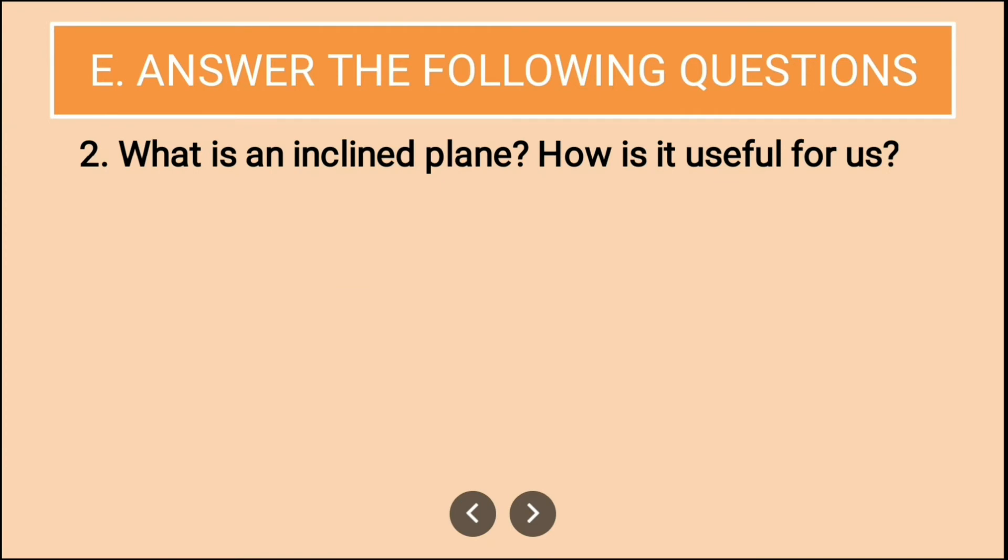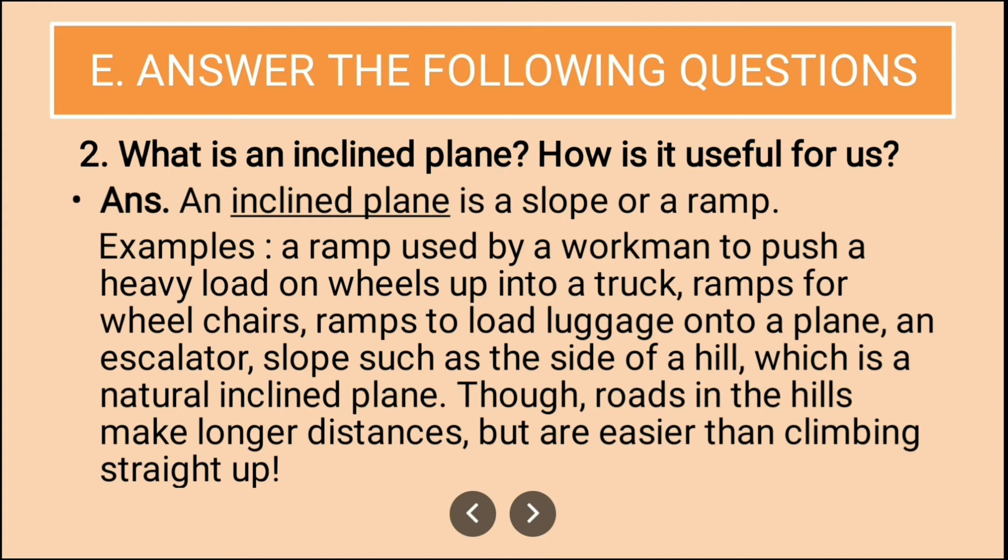Well the next question is: what is an inclined plane? How is it useful for us? Here you will write: an inclined plane is a slope or a ramp. Examples: a ramp used by workmen to push heavy load on wheels up into a truck, then ramps for wheelchairs, ramps to load luggage onto a plane, an escalator, slopes such as side of a hill which is a natural inclined plane. Though roads in the hills make longer distances but are easier than climbing straight up. So you can see how inclined planes are useful to us.